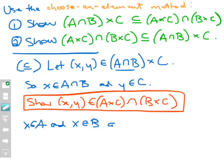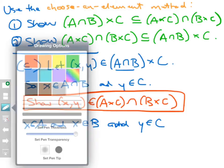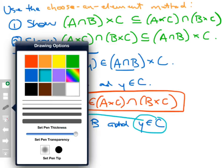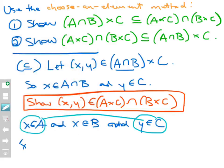I also know that Y belongs to C. So let's think about what we have here. I have these three things joined by 'and,' so they're all true. Notice that X belongs to A and Y belongs to C, so I can conclude that the ordered pair X comma Y belongs to A cross C. And similarly, X belongs to B and Y belongs to C.